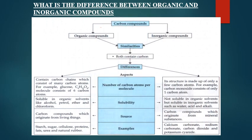Organic compounds contain carbon chains which consist of many carbon atoms — for example, glucose, whose molecule consists of six carbon atoms. Whereas inorganic compounds are made up of only a few carbon atoms — for example, carbon monoxide, which consists of only one carbon atom.